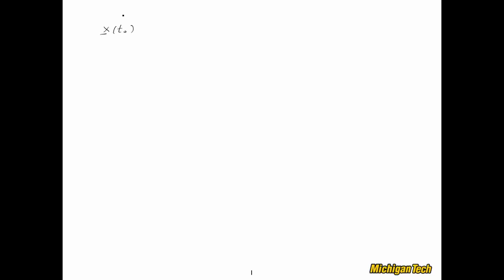To get started, recall the state input-output pair notation introduced in a previous video. If you know x, the state at t0, and u of t, the input for all t greater than or equal to t0, then you can calculate the output y of t for all t greater than or equal to t0. The dimensions are n by 1 for the state vector, m by 1 for the input, and r by 1 for the output.